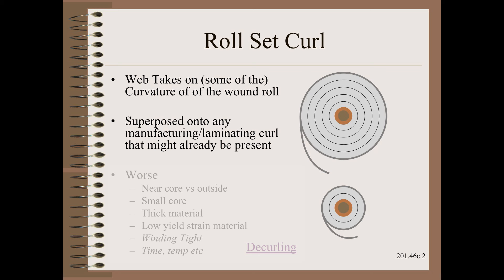First, a definition. Roll set curl is where the web takes on a portion of the curvature of the wound roll. We must be careful because the web could already be curled by upstream processes, such as coating and laminating, that also might be in the correct direction and of reasonable size. The only way to clearly separate is to intercept the web prior to winding, such as via an e-stop.